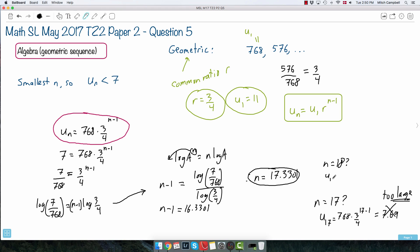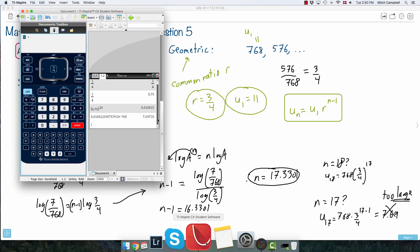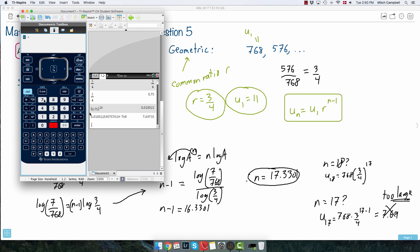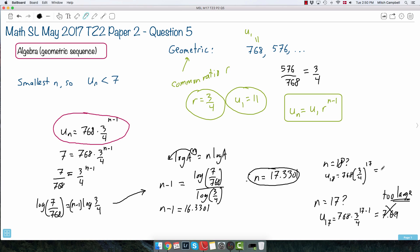Whereas, let's try u18, just to make sure, right? So, that should be 768 times 3 fourths to the power of 18 minus 1, which is 17. So, we'll do that on the calculator and double check. So, we take our 0.75, that was 3 fourths. Raise that to the power of 17 this time. We get that answer, multiply that by 768. We end up with an answer of 5.77. Is that less than 7? Yes.